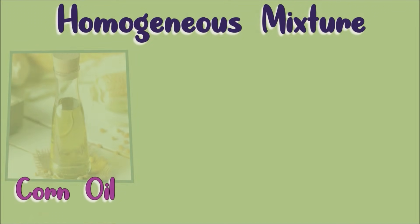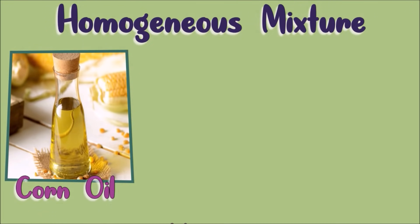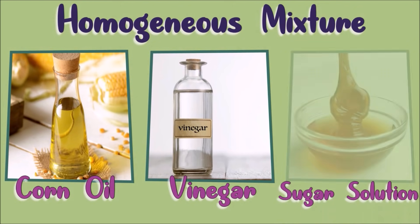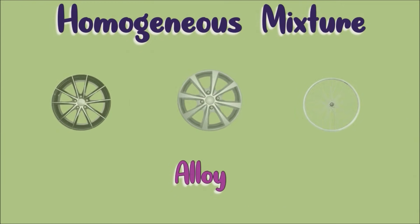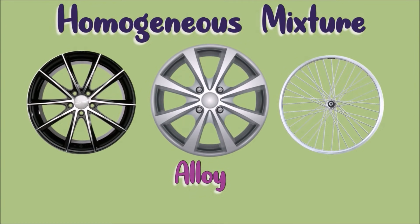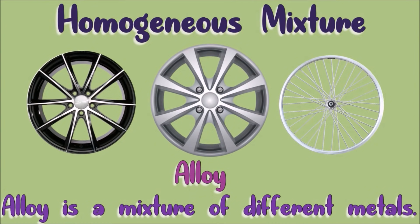Corn oil, vinegar, and sugar solutions are homogeneous mixtures since only a colorless liquid is observed. An alloy, for example, is a homogeneous mixture. It is a mixture of different melted metals.